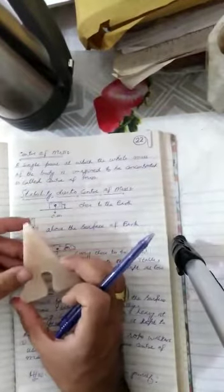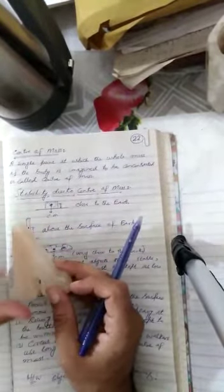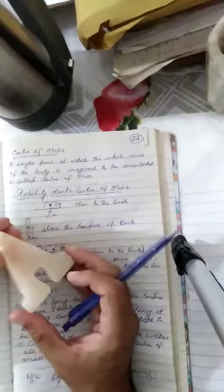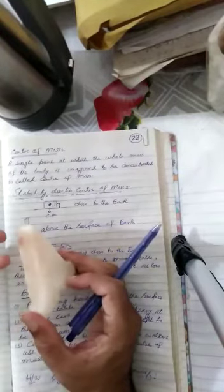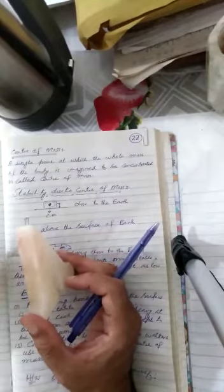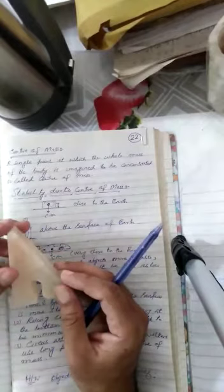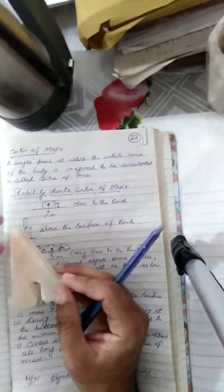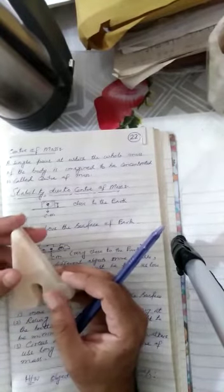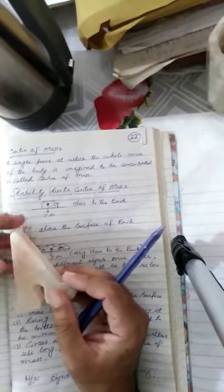I mean, let's suppose girls, if we have any object, let's suppose if we consider this object. Right? So, if I say now this object having some particular mass, scientists say that the whole mass we suppose and we just imagine that the whole mass is concentrated through a single point and that point is known as Center of Mass.